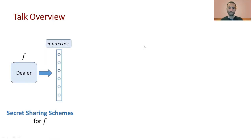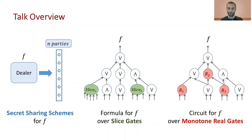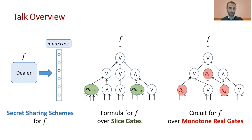The first model is secret sharing schemes, which is an information-theoretic cryptographic model. The other two will be types of formulas or circuits with special gates — either slice gates or monotone real gates. Formulas over slice gates is a new model we introduce to connect between secret sharing schemes and monotone real circuits.